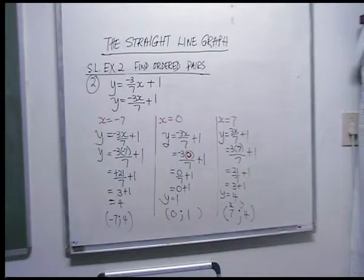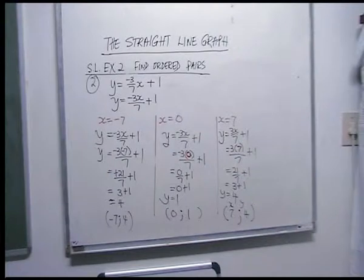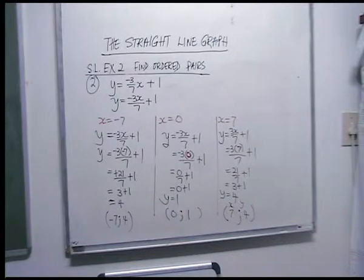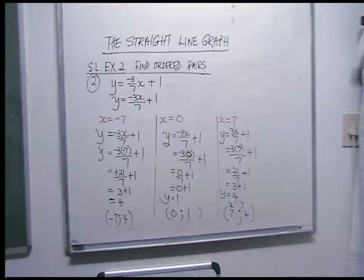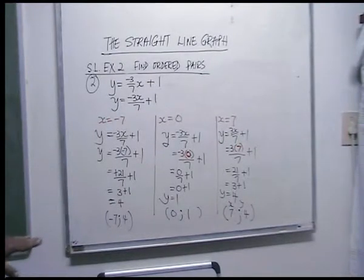In the next lesson, we're going to start drawing graphs. If you're studying this, you should treat everything from finding ordered pairs to the end of exercise two as lesson one. Then take a break — at least one to two hours — and come back. We can call this lesson one on drawing straight line graphs.